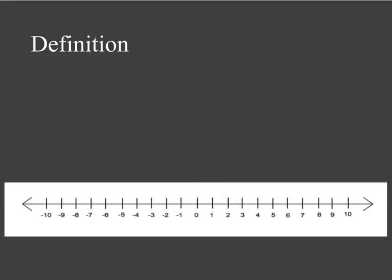So let's talk about a couple definitions. First definition I have is absolute value. Now absolute value is the distance from the number to zero. So it's a distance from the number to zero.